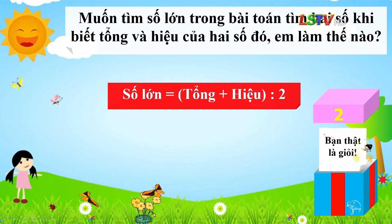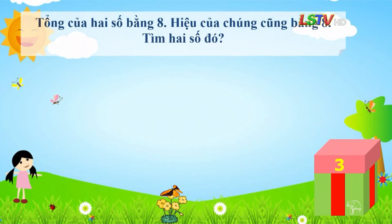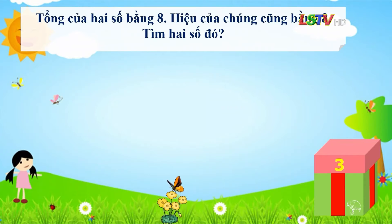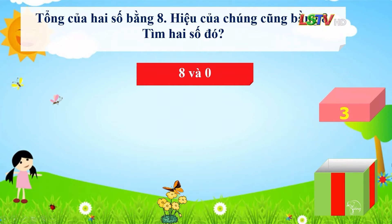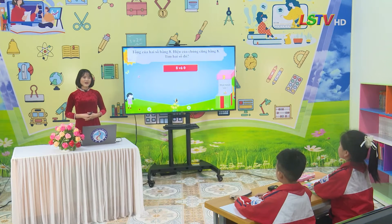Chúng mình đến với hộp quà cuối cùng nào. Tổng của 2 số bằng 8, hiệu của 2 số cũng bằng 8. Tìm 2 số đó. Thưa cô, 2 số cần tìm là 8 và 0. Rất chính xác. Câu trả lời của em thật tuyệt vời. Xin chúc mừng em đã mở được hộp quà. Vậy là các câu hỏi ở phần khởi động không làm khó được chúng mình đúng không nào?